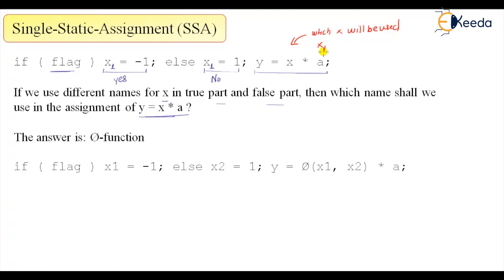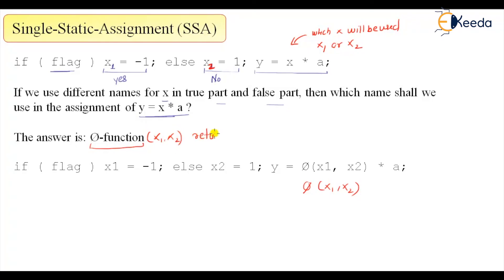The question is: which x will be used? It will be either x1 or x2. The answer is we have to use a phi function. The phi function takes arguments x1 and x2 and returns whichever value is applicable. So we use phi(x1, x2), which returns the correct value of x. Thank you.